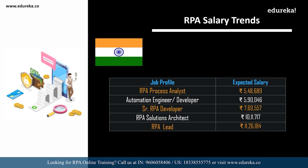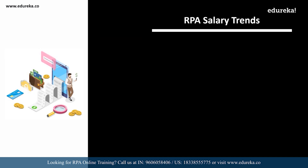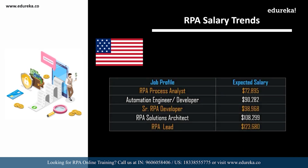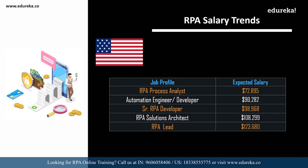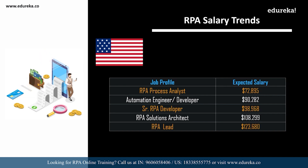Similarly, for the same roles in the USA: an RPA process analyst can expect around 72,000 dollars; an automation engineer or automation developer around 90,000 dollars; a senior RPA developer around 98,000 dollars; an RPA solutions architect around 1,00,000 US dollars; and an RPA lead around 1,23,000 dollars. It's a huge amount of money, so now is the right time to start your career in RPA.